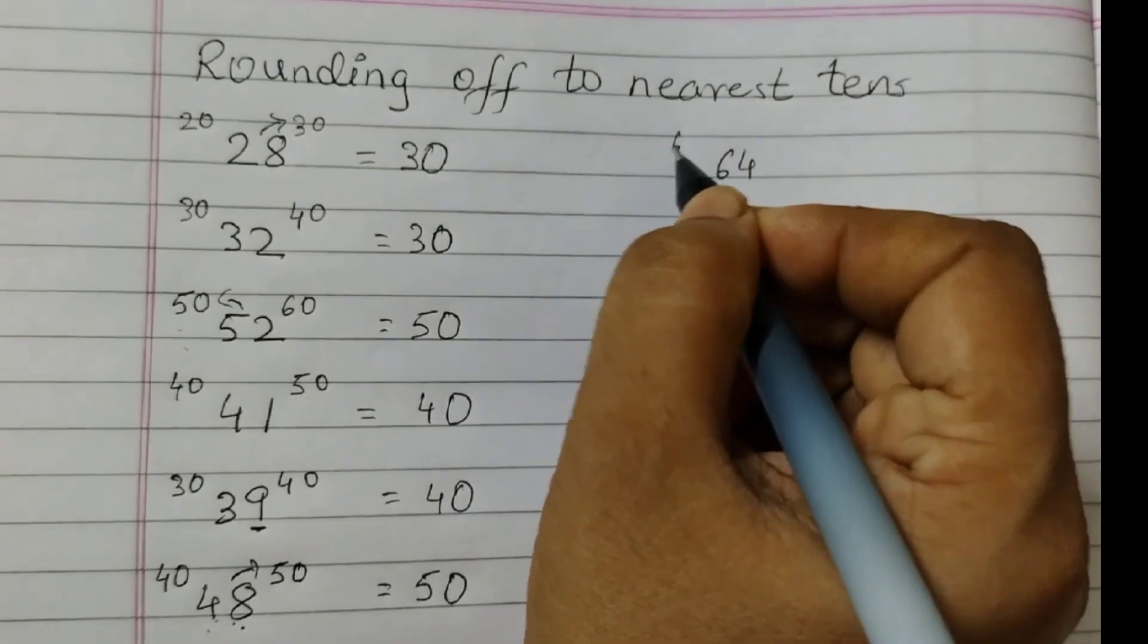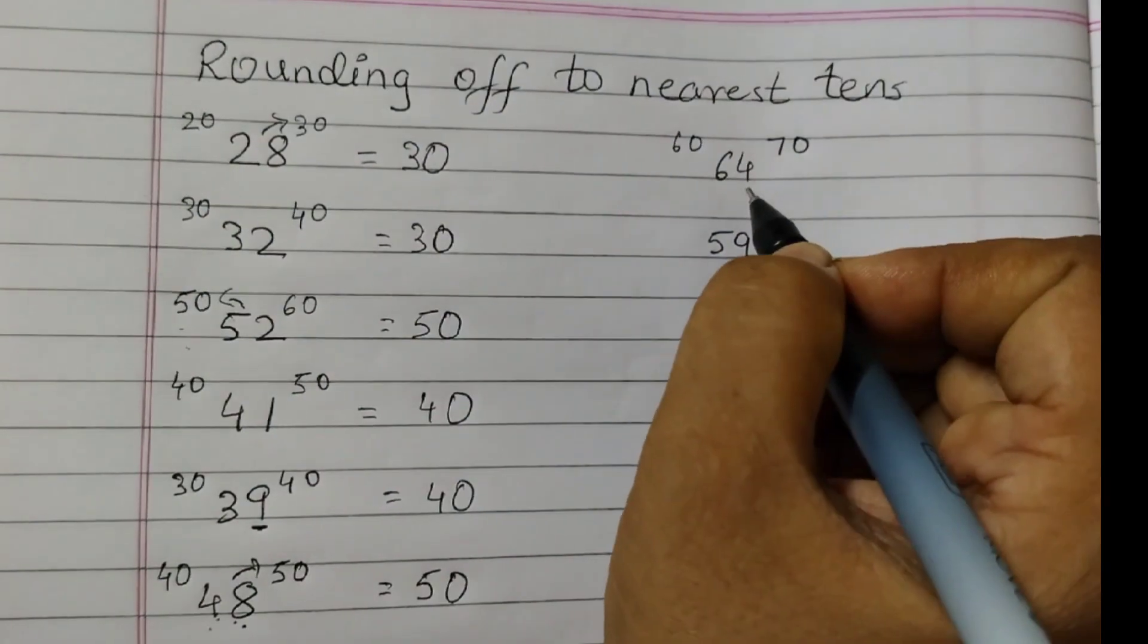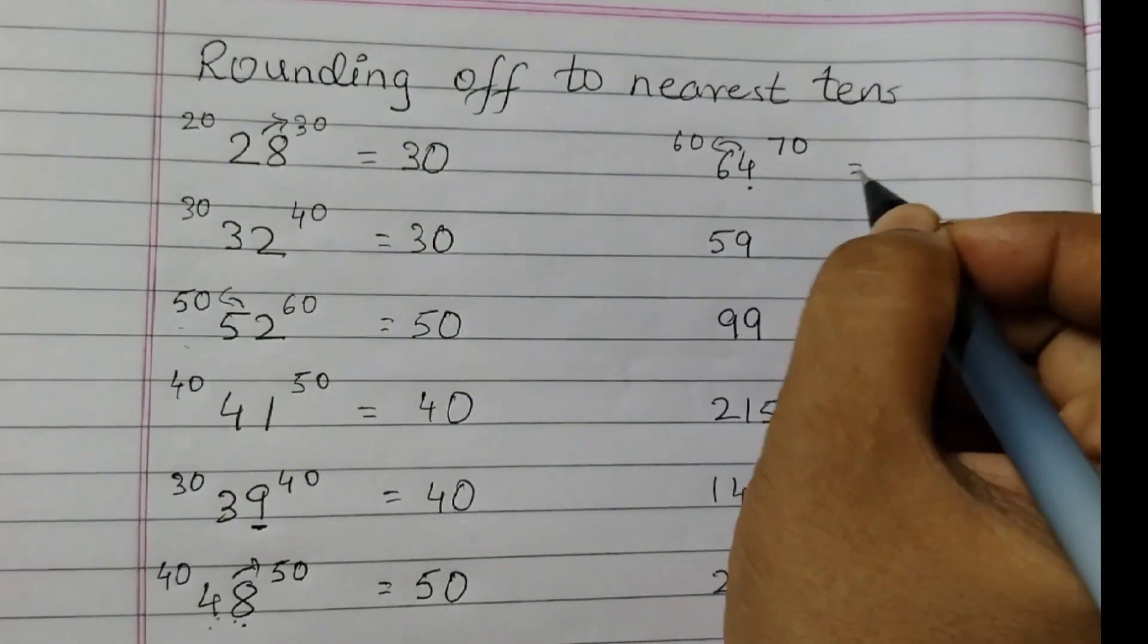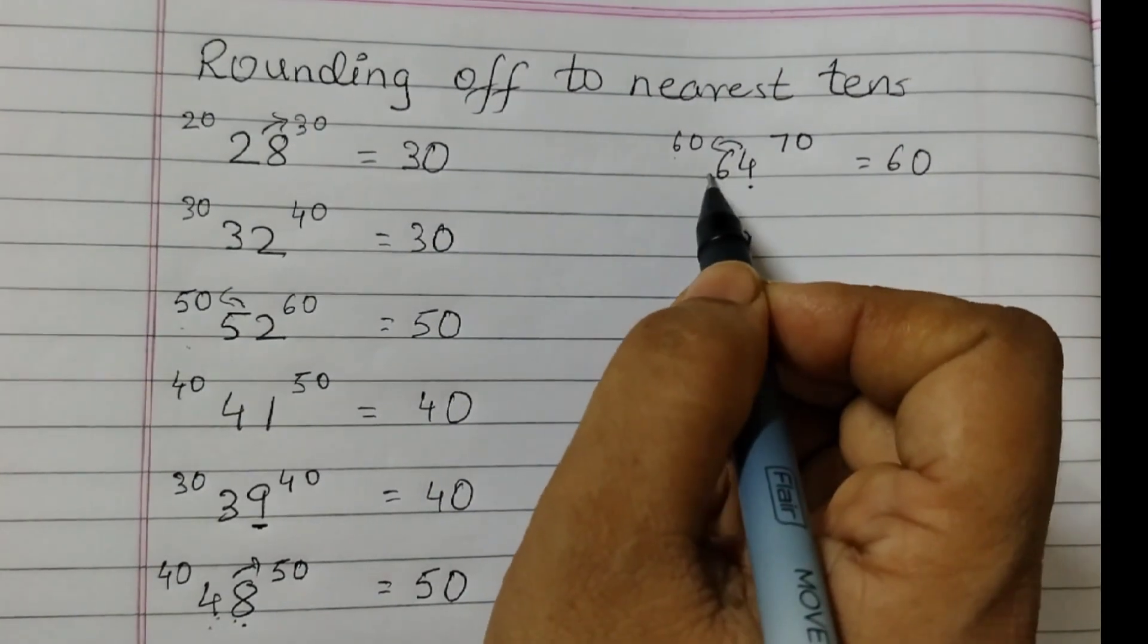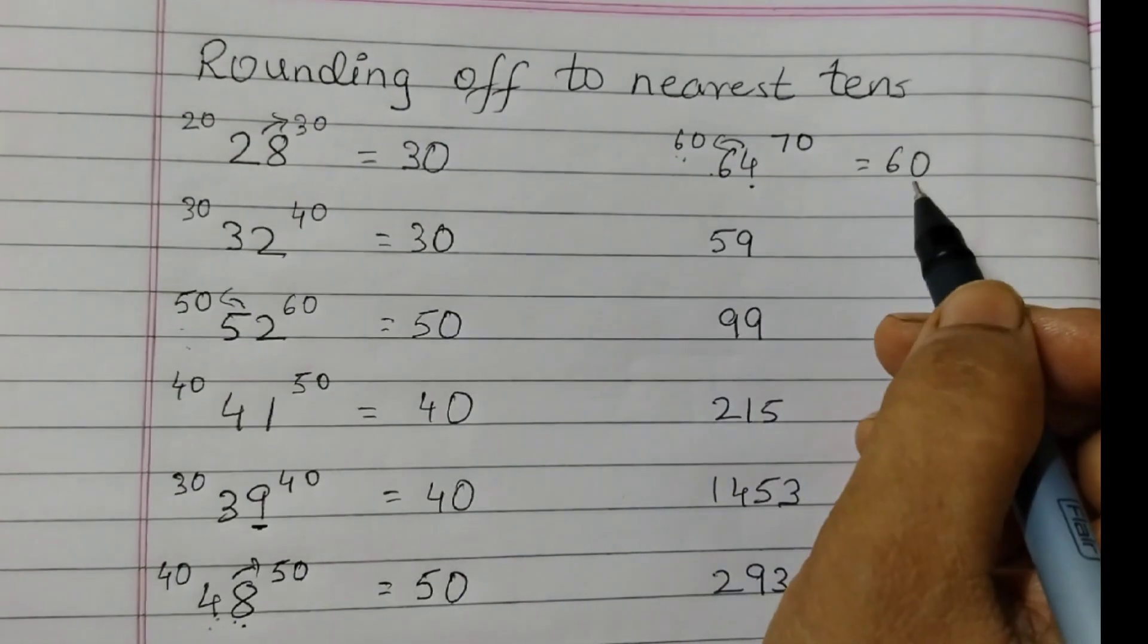64 is between 60 and 70. Here we have a 4. 4 means we need to move to the smaller number, which is 60. Also we can see that the gap between 60 and 64 is less, so it is closer. That means rounded off to 60.